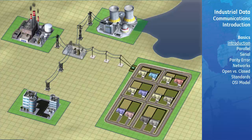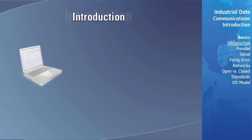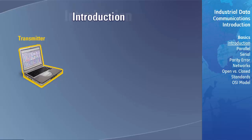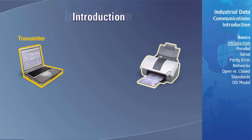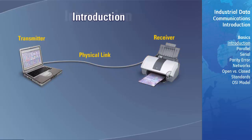Let's start by introducing some of the basic concepts and terminology used in this area. Within a data communication system, there is a transmitter of information, a receiver of information, and a physical link. The communications link can be simplex, half-duplex, or full-duplex.